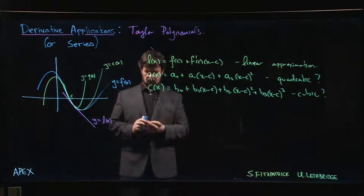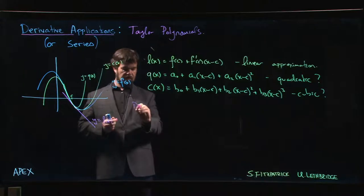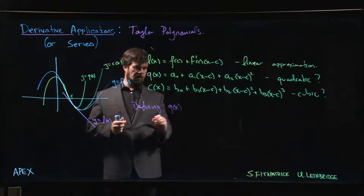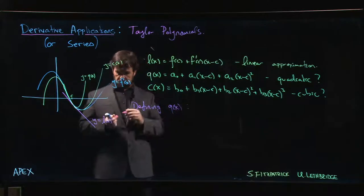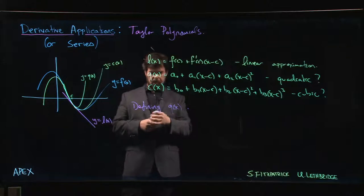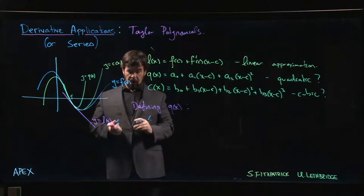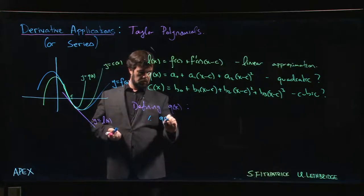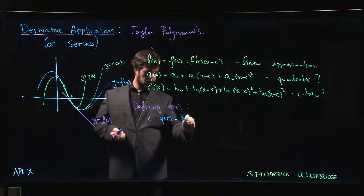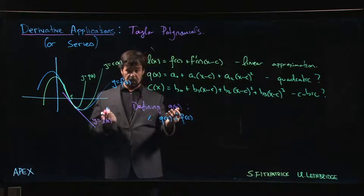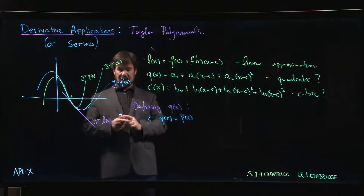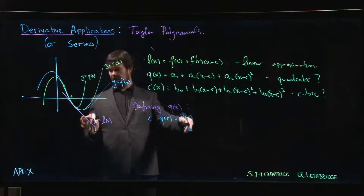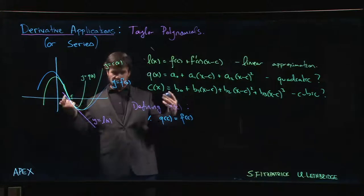So let's say we want to define Q of x. What are some things that we're going to require? Well, the minimum requirement that we should put on this thing is that it should agree with the original function at that point. So at c we should have equality, exact equality. So Q of c should equal F of c. They should touch at that point.